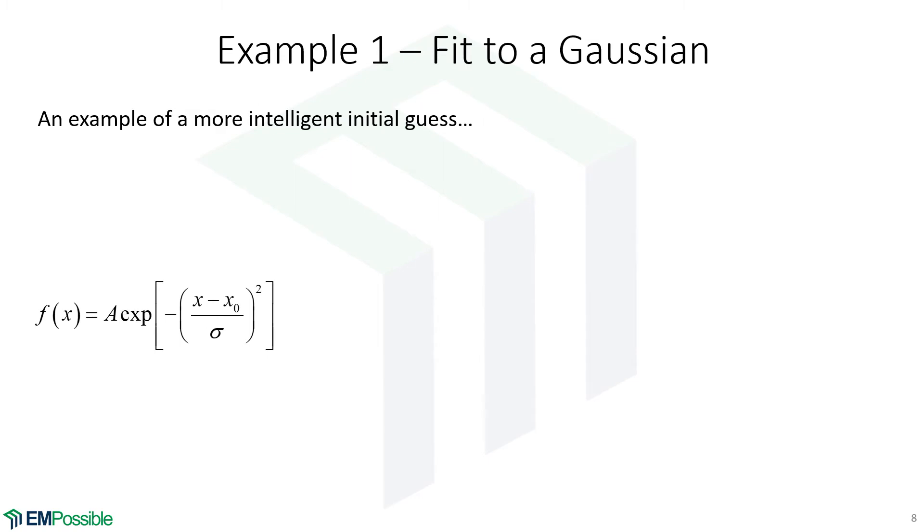All right. First thing the code has to do is make an intelligent guess. Looking at that equation, and we have a whole bunch of random measured samples, how can we do this? Well, maybe what we could do is search for the maximum value of F and assume that is A.